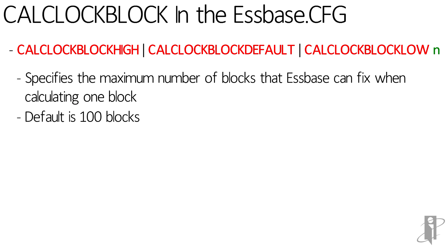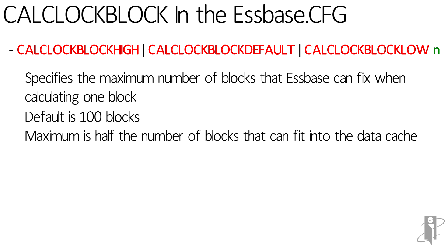The default for the default setting is 100 blocks. If you set a number that's too big — say your data cache is fairly small and you set Calc Lock Block to 7 million — it can only really lock up to half the data cache. So it will actually lower your Calc Lock Block number to half the amount of blocks that will fit fully expanded into the data cache.